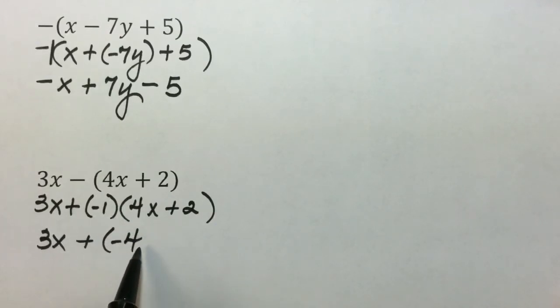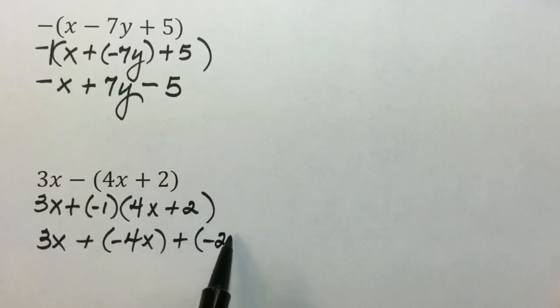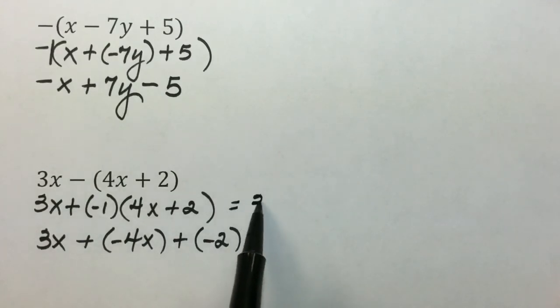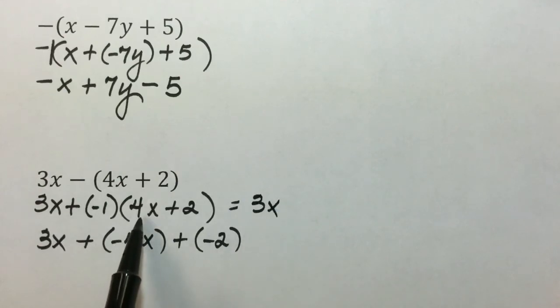Negative 1 times 2 is negative 2. We could have equally written this expression as 3x, opposite of 4x is negative 4x.